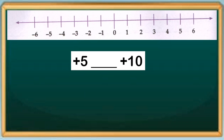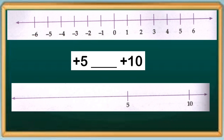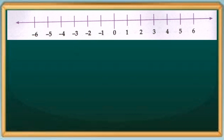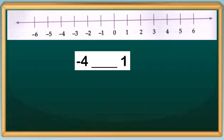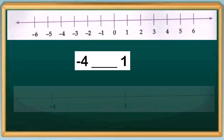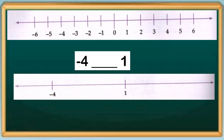Next example: let's compare positive five and positive ten. Positive five is on the left side of ten. Therefore, positive five is less than positive ten — our answer is less than. Next: let's compare negative four and positive one. Based on the number line, negative four is on the left side of positive one. Therefore, negative four is less than positive one — our answer is less than.